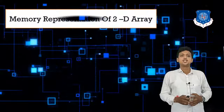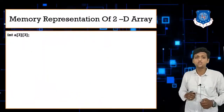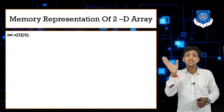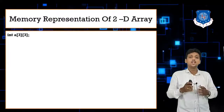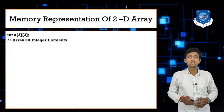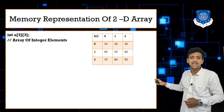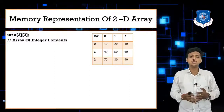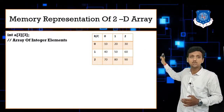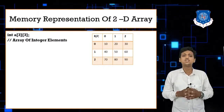The next topic is memory representation of a 2D array. A 2D array is defined as: int a[3][3], meaning data type, variable name, size of rows, and size of columns. This represents a 3×3 matrix. The elements are 10, 20, 30, 40, 50, 60, 70, 80, 90 — a total of 9 elements in the 3×3 matrix.